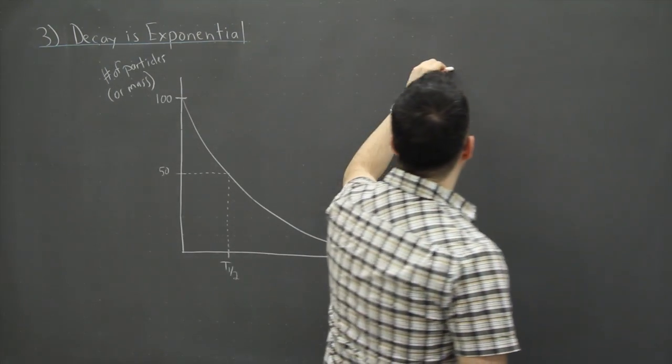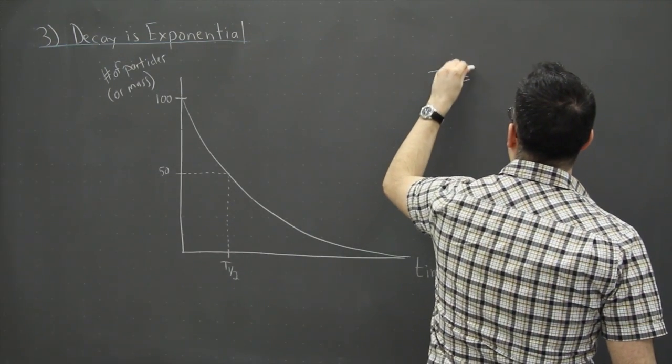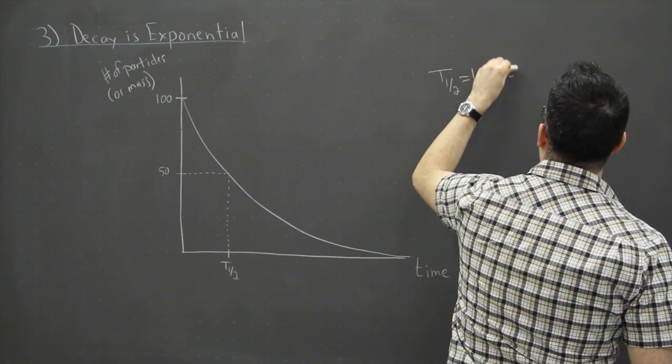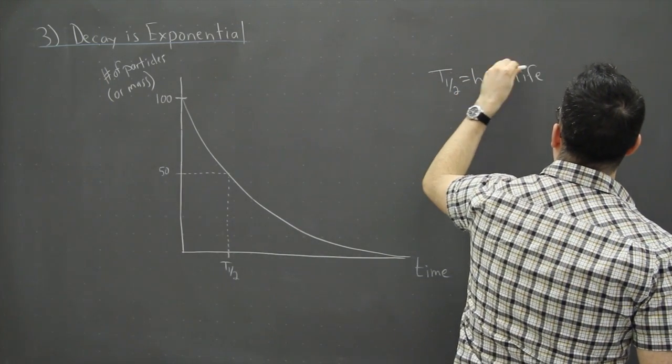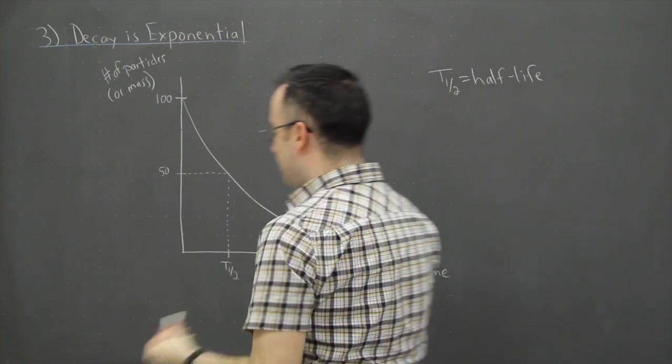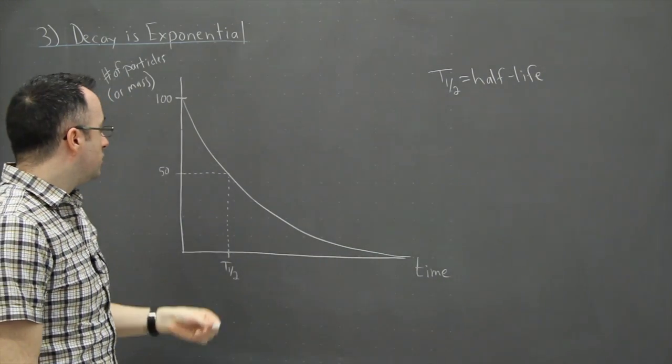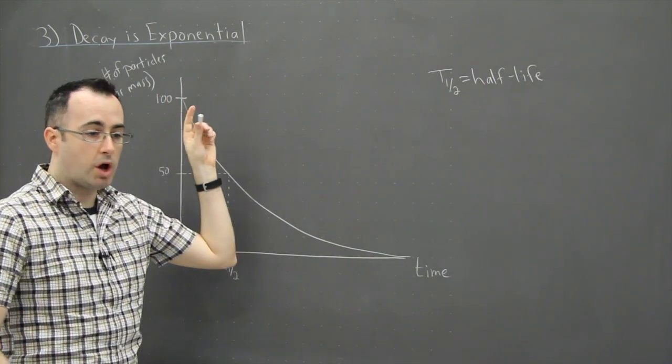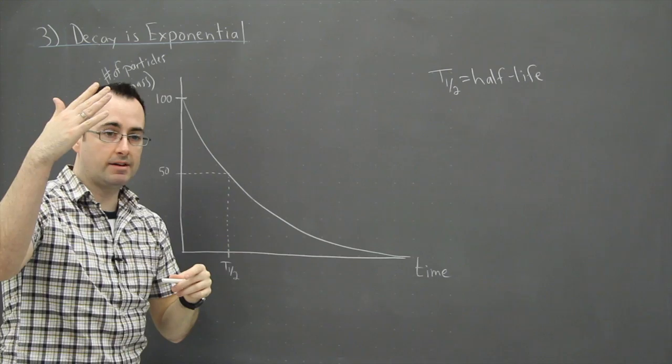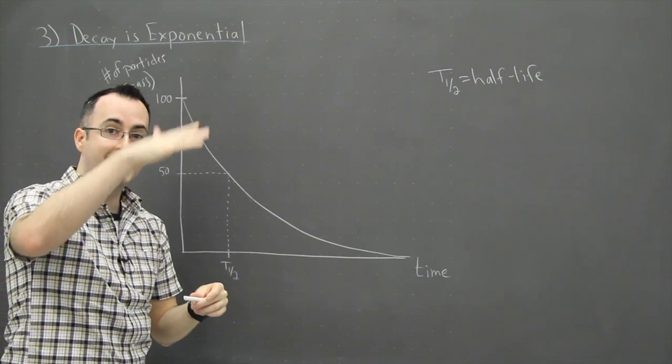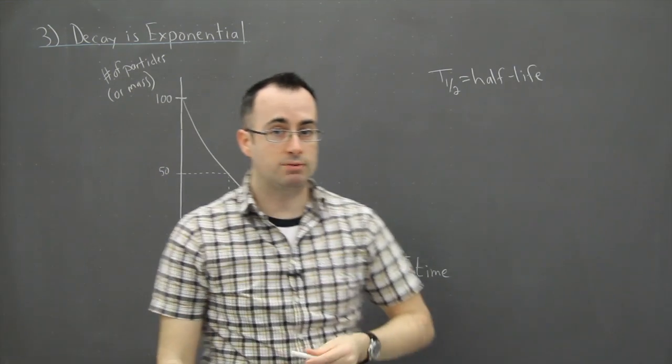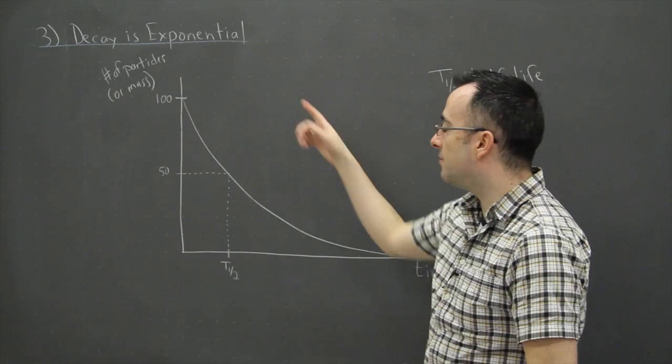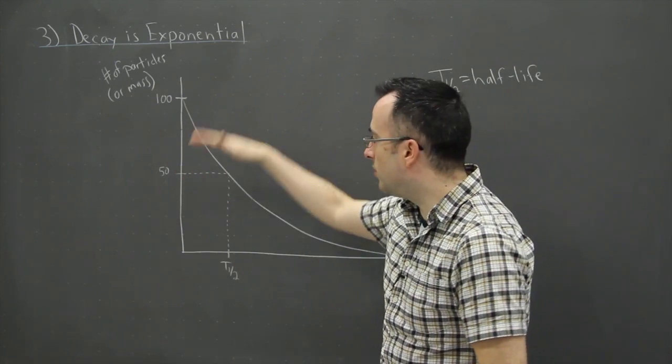Now we say that t one-half is called the half-life. That's going to be defined then as the amount of time it takes to get from a hundred percent of its mass or the number of particles down to half. So that's why we call it half-life because it's the time to get half of what you had before.